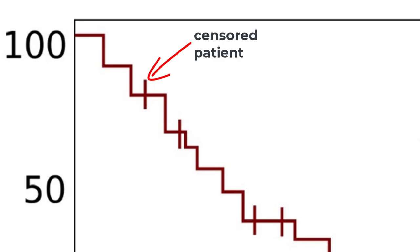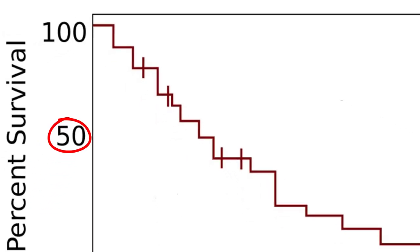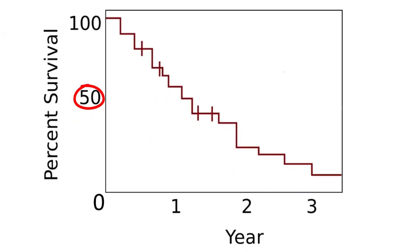We'll go over what censoring means a bit later. We can determine median survival by finding when half of the patients have not had the event of interest and half of the patients have had the event of interest. To determine median survival, you can draw a horizontal line until it hits the survival curve, and then draw a vertical line from there down to the x-axis. In this chart, that seems to occur a bit after one year.